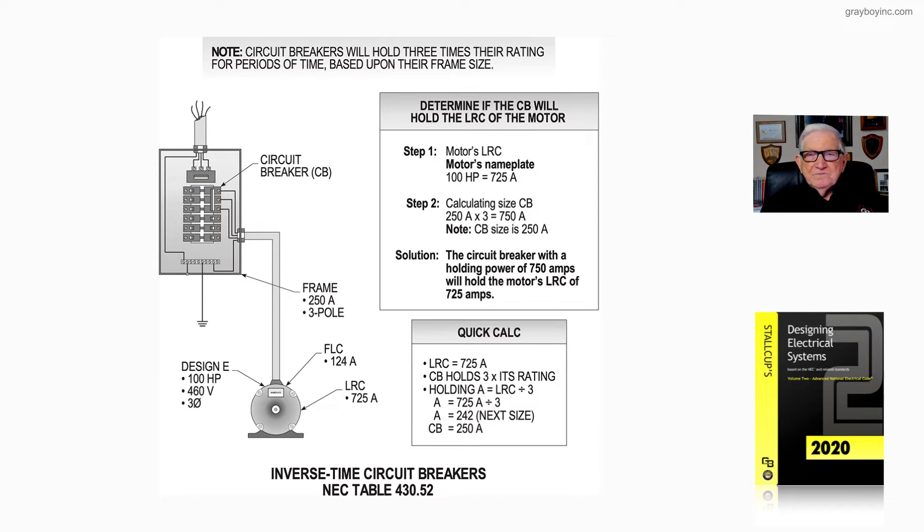If we take a circuit breaker at 250 amp rating times three, that's 750, which is greater than the 725 amps in step one. So if the motor doesn't take a long period of time to accelerate its load, that's going to start that motor and its load.